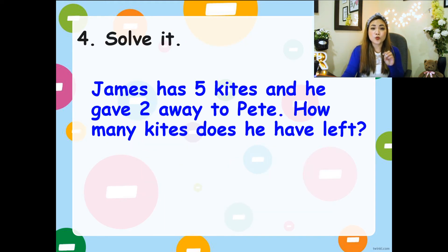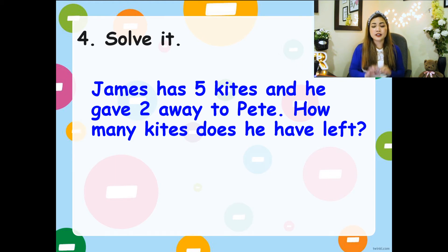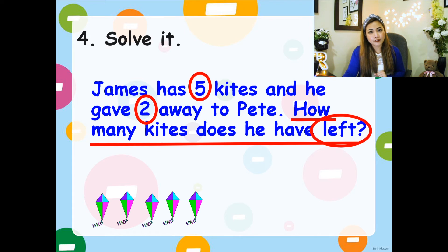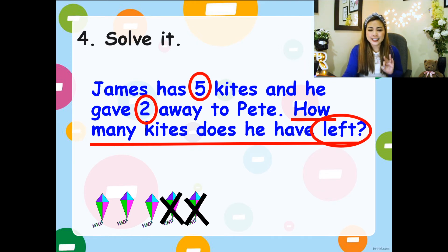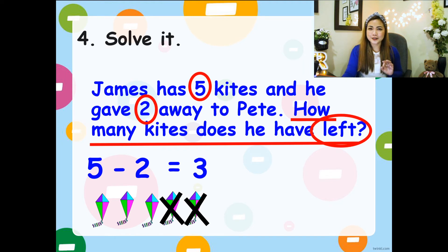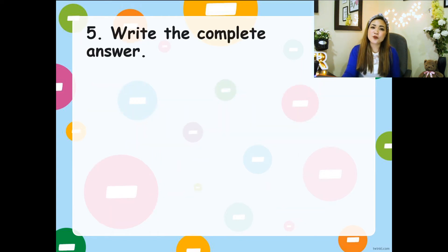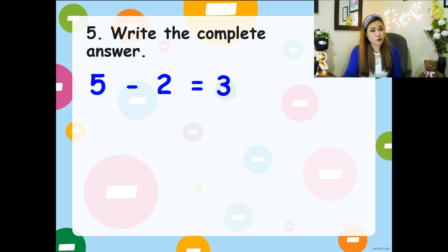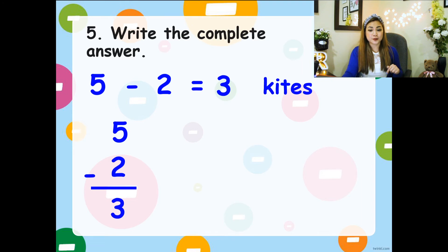We can solve this word problem horizontally or vertically, or you can draw objects to represent the kites. I've got five kites and I took away two. How many are left? Let's count: one, two, three — three are left. Let's write the subtraction sentence: five minus two equals three. And let's write it vertically as well: five minus two equals three. Don't forget the complete answer — three kites, because we're looking for kites.